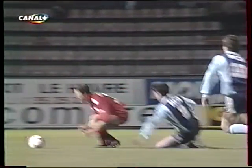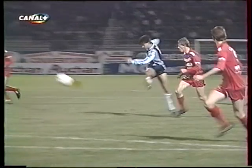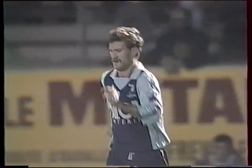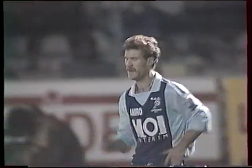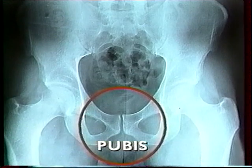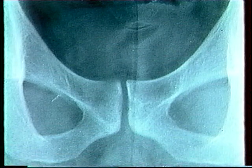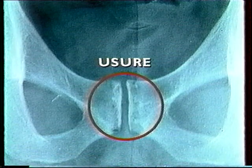Les footballeurs ont les grands droits et les adducteurs particulièrement développés. Les obliques sont plus faibles. L'intensité des gestes du football — notamment les frappes de balle, les tacles et le jeu de tête — accentuent ces déséquilibres. Les tractions sur le pubis sont alors inégalement réparties. Les douleurs apparaissent. Regardez la radiographie : l'articulation s'est élargie et elle s'est usée.